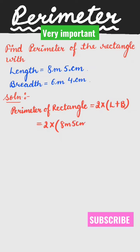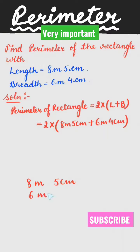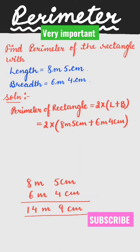First of all we will add: 8 meter 5 centimeter plus 6 meter 4 centimeter. This is equal to 9 centimeter and 14 meter, so this is equal to 14 meter 9 centimeter.